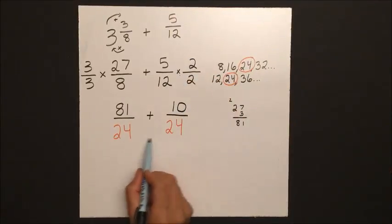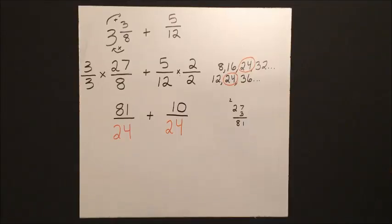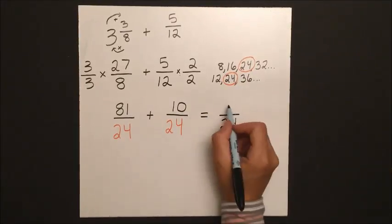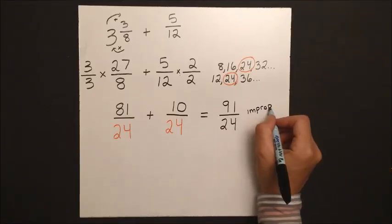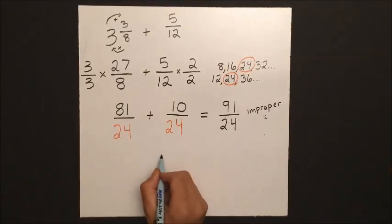So our denominator stays 24. 24 is the possible number of spaces, and out of that we have 91, but that's improper and we need to turn that back into a mixed number.